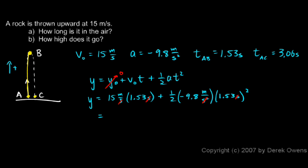So let's do the math. 15 times 1.53 is 22.95, and that's meters. And then I have ½ times negative 9.8 times 1.53 squared. That's negative 11.47 meters. And those combined to give me 11.48 meters for my answer. That's the answer to part B, how high it goes.